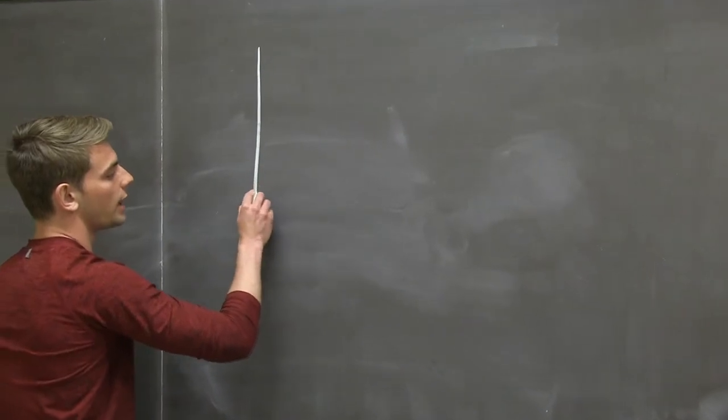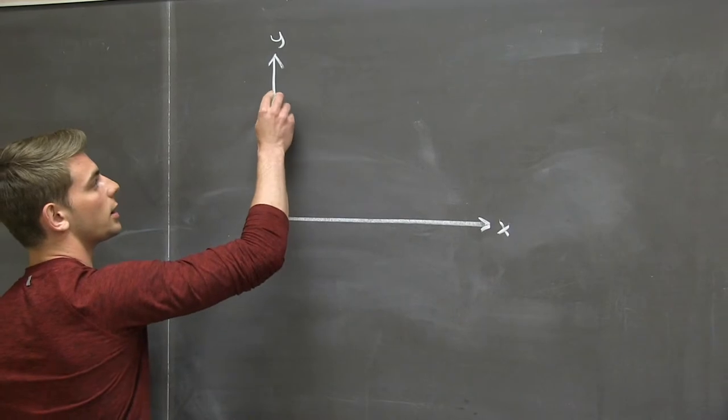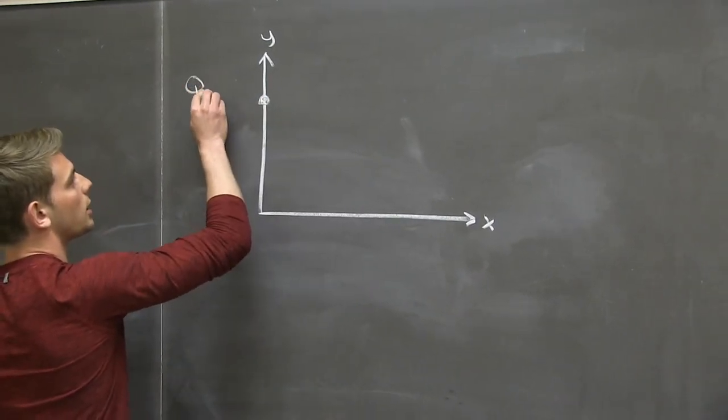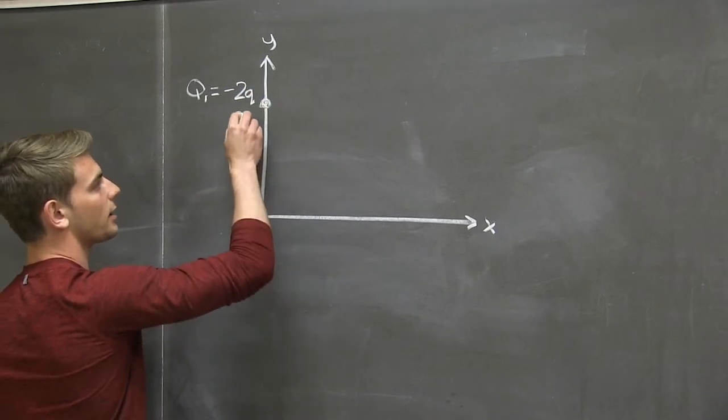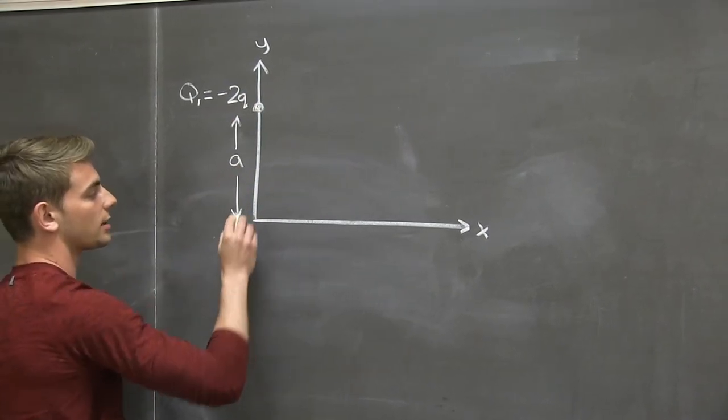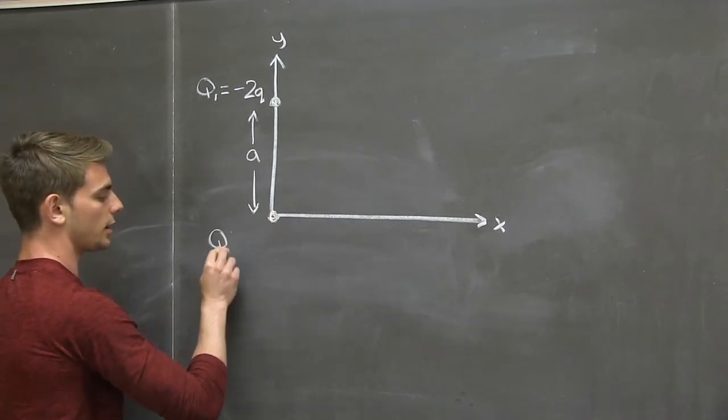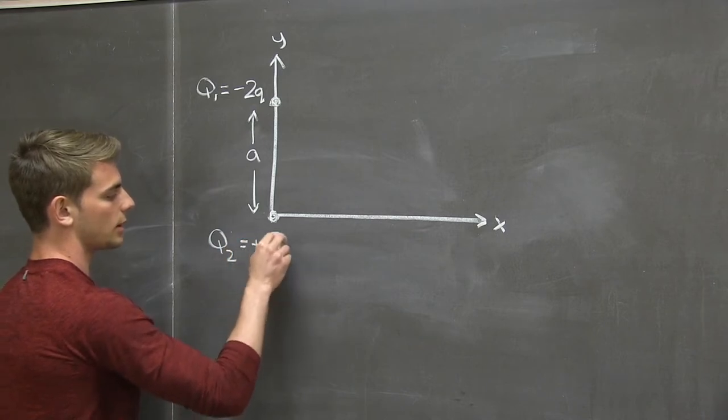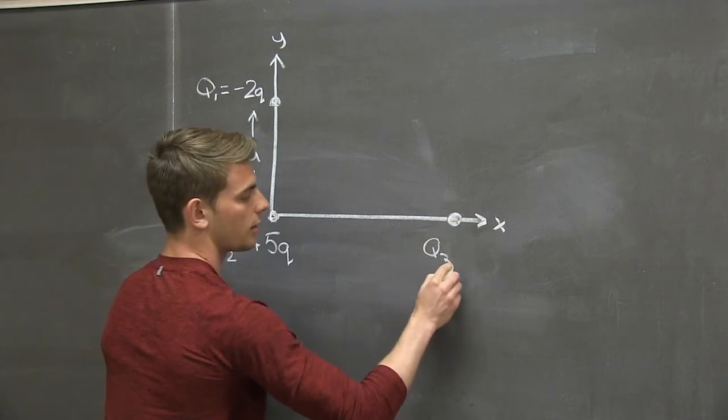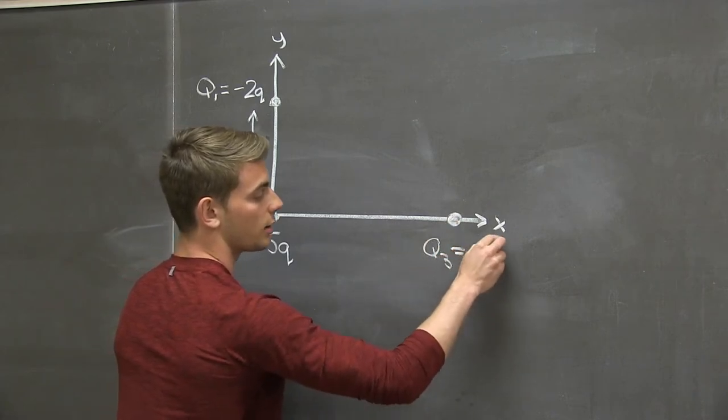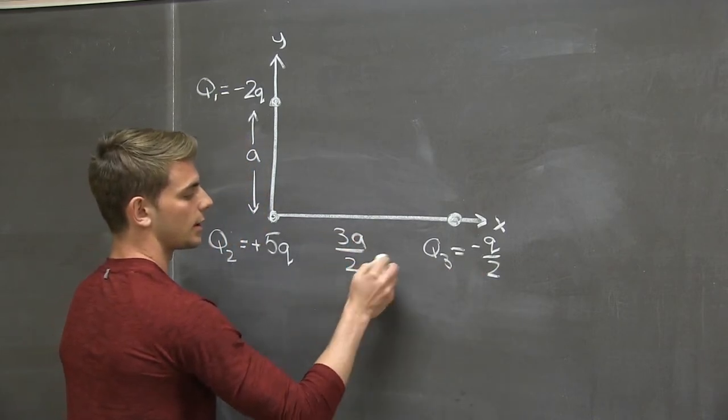So we're told that, given our x and y axis here, the first charge q1, which is negative 2 little q, is a distance a above the origin on the y axis. Now q2 is on the origin directly and has a charge of positive 5q. And lastly q3, which has a charge of negative q over 2, is a distance 3a over 2 from the origin.